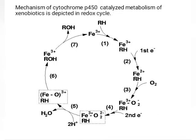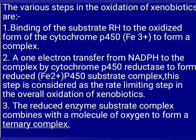The mechanism of cytochrome P450-catalyzed metabolism of xenobiotics is depicted in the redox cycle. In the first step, R-H is added to the ferrous iron. In the second step, one electron is removed. In the third step, an oxygen molecule is added. In the fourth step, a second electron is removed. In the fifth step, two hydrogens are added to remove a water molecule. In the sixth step, it is converted into Fe³⁺-R-OH, then in the seventh step, R-OH is removed to regenerate Fe³⁺.